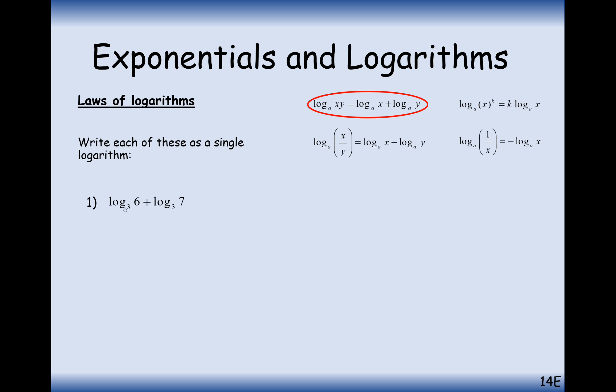If it's log base 3 of 6 plus log base 3 of 7, you can multiply the 6 and the 7 together, so you get log base 3 of 42. That's how you simplify a logs expression.